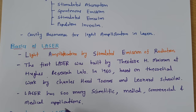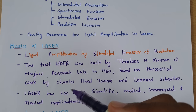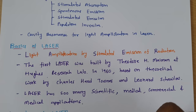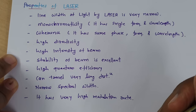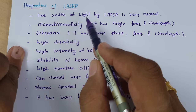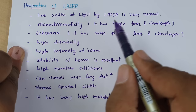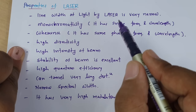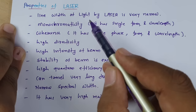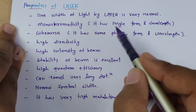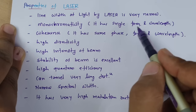Laser is so useful in communication as well as in commercial applications because it has many applications — scientific, medical, commercial, and military. Now let us understand the properties of laser. The first property is that the line width of light by laser is very narrow, which is why you can have a spot that you can transmit to very long distance. Monochromaticity is there with laser, meaning it has a single frequency and wavelength.